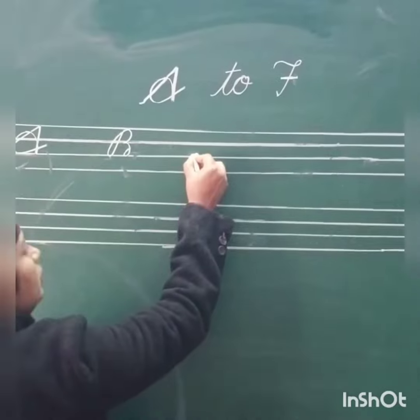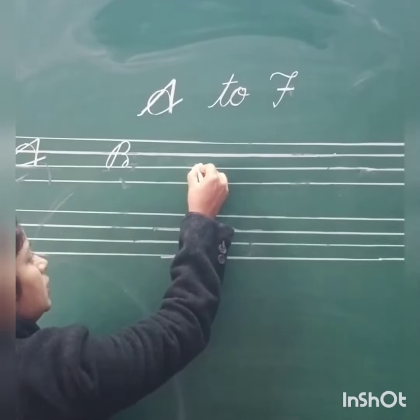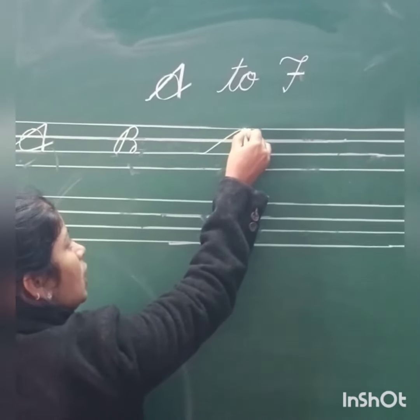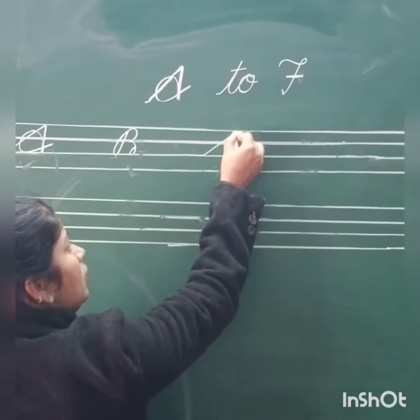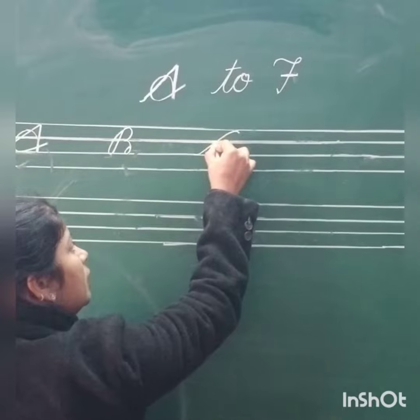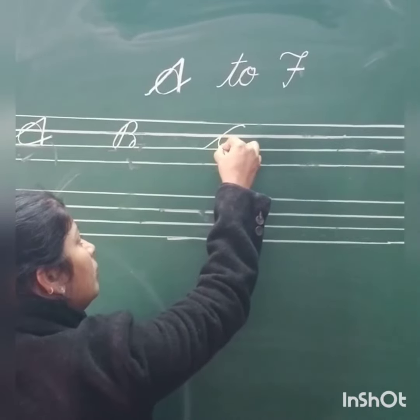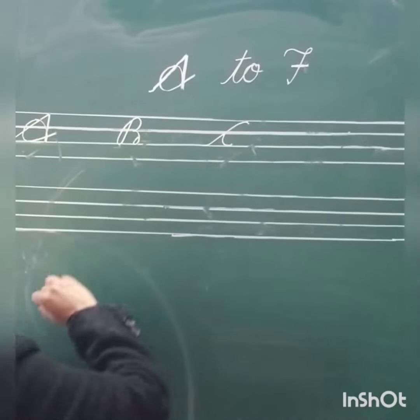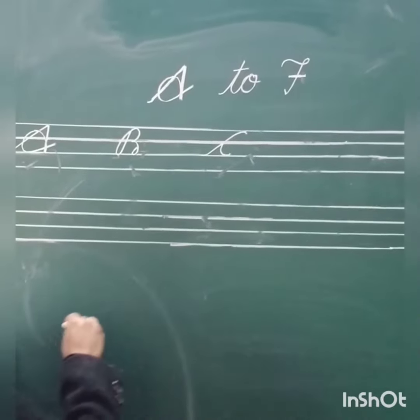Next, cursive C: tail, round, touch the blue line — cursive C.